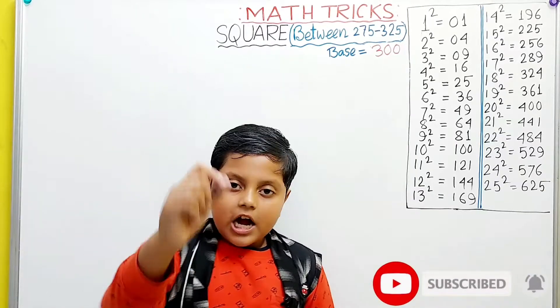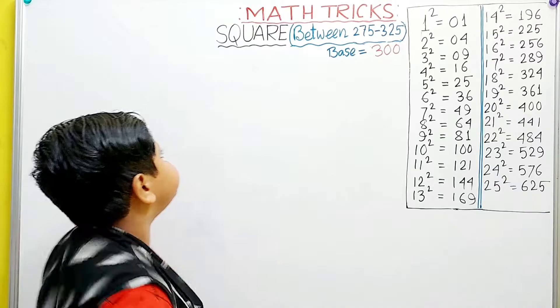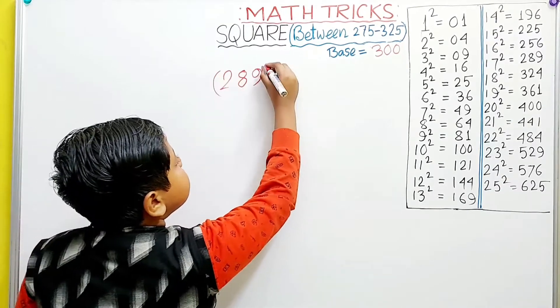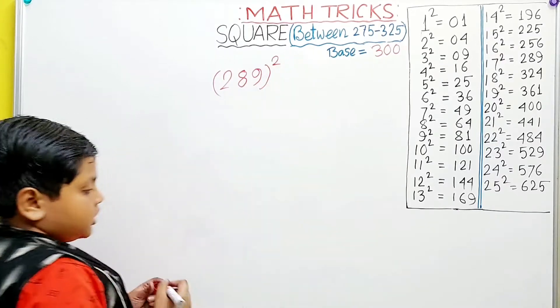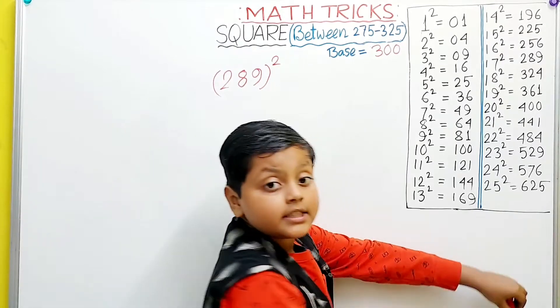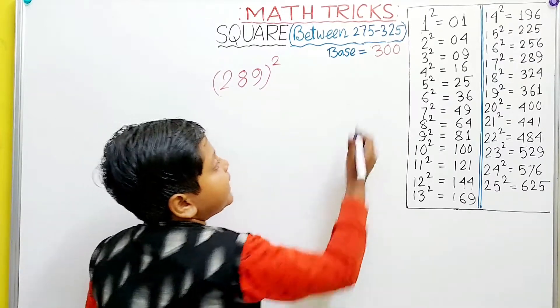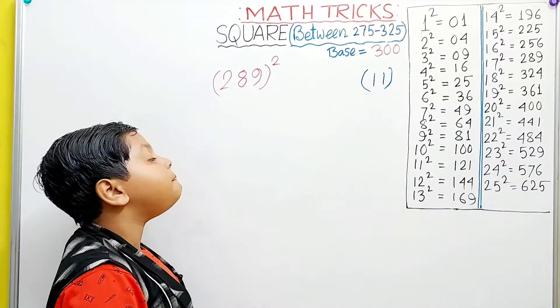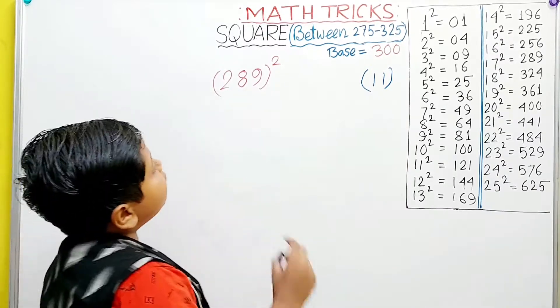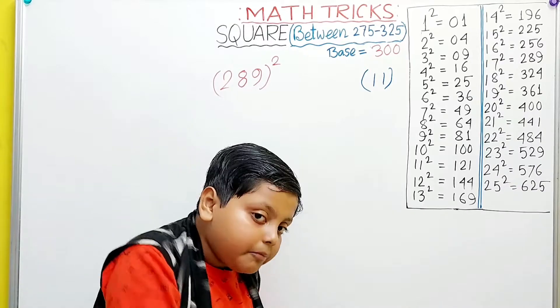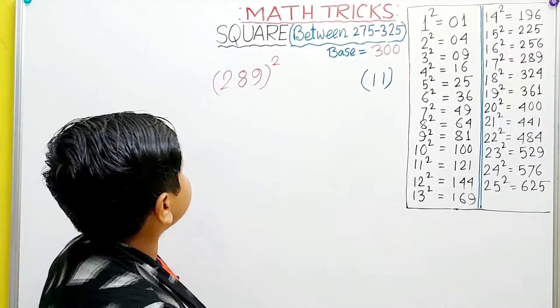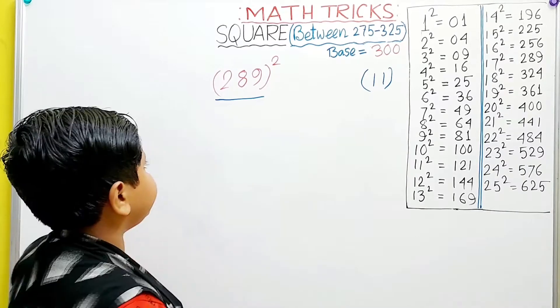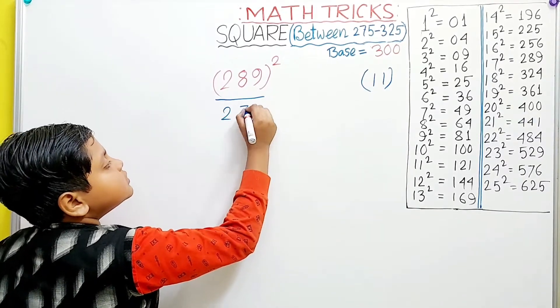Let's take our first example, which is, let's say, 289. At first it is 11 smaller than the base which has changed to 300 in this video. Then because it is smaller we have to again subtract 11 from 289. After this, 289 minus 11 equals 278.